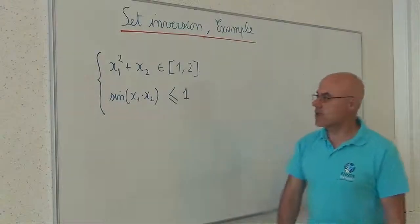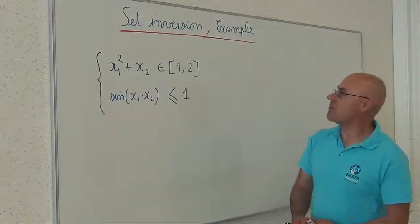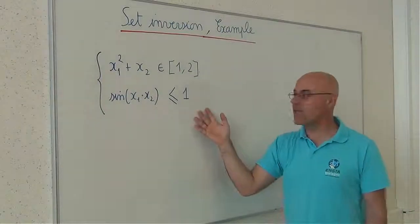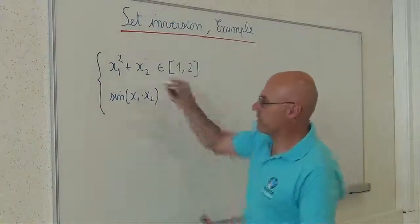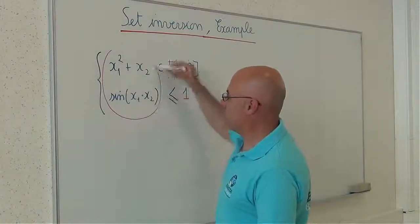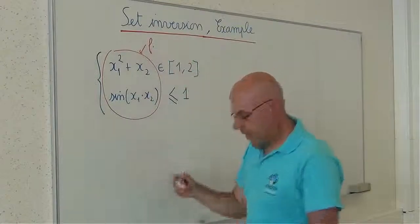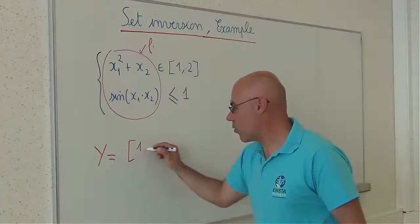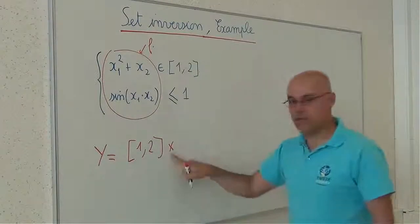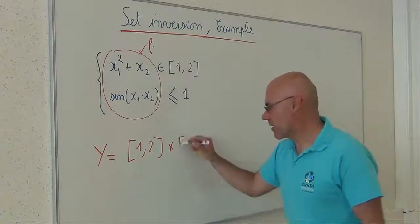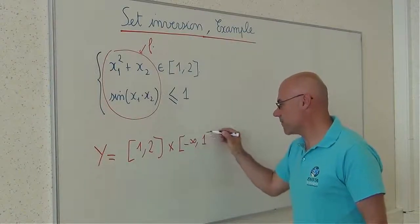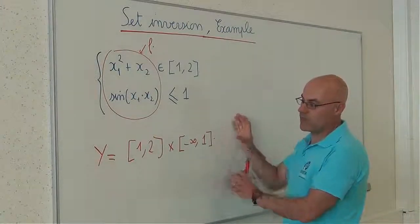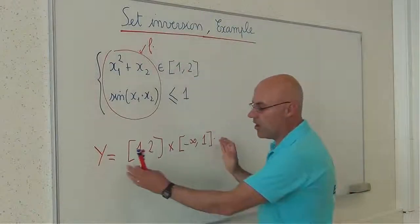To illustrate the principle of set inversion problems, consider a set described by inequalities. Here, I will have the function f, and if I define the set Y as [1,2] times — a Cartesian product — with (-∞, 1], then the solution set will correspond to the reciprocal image by f of this set.